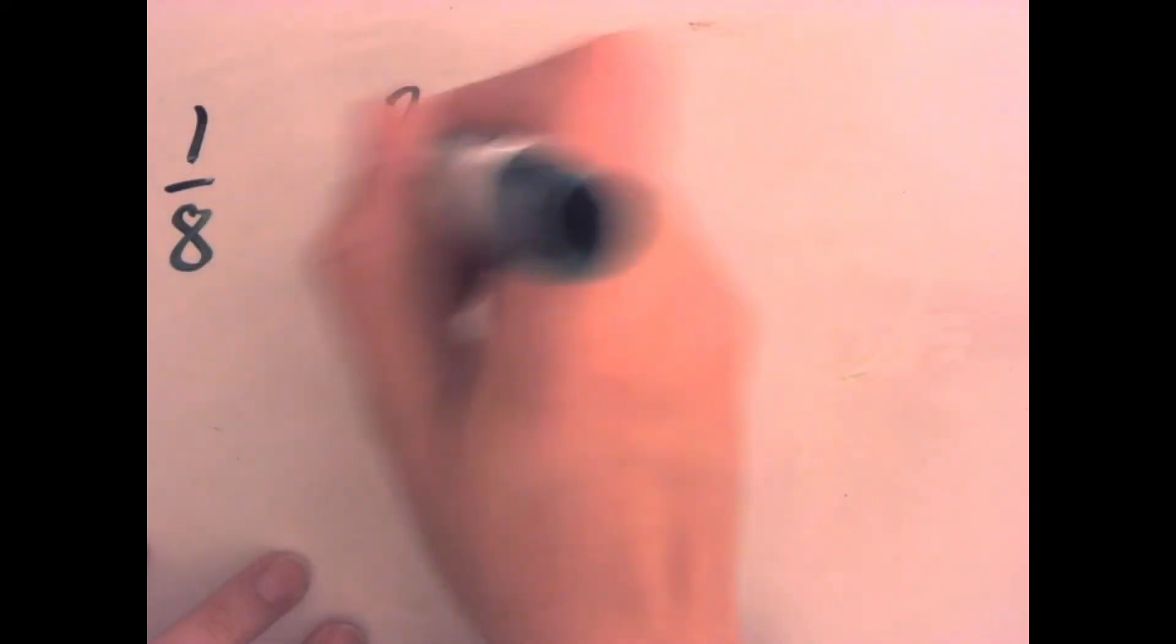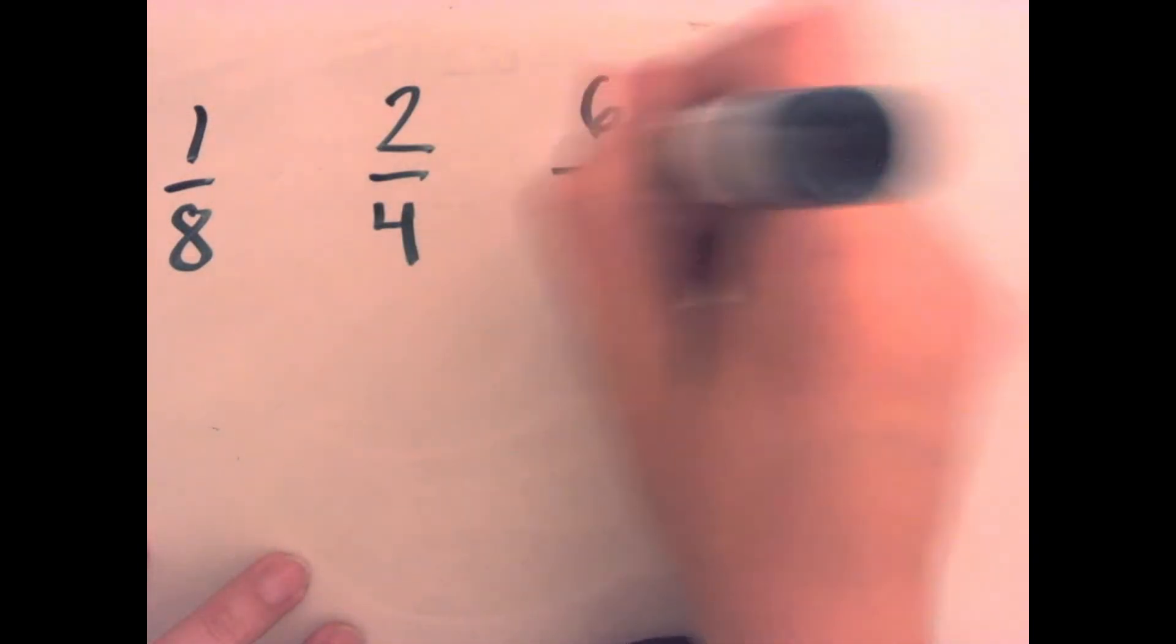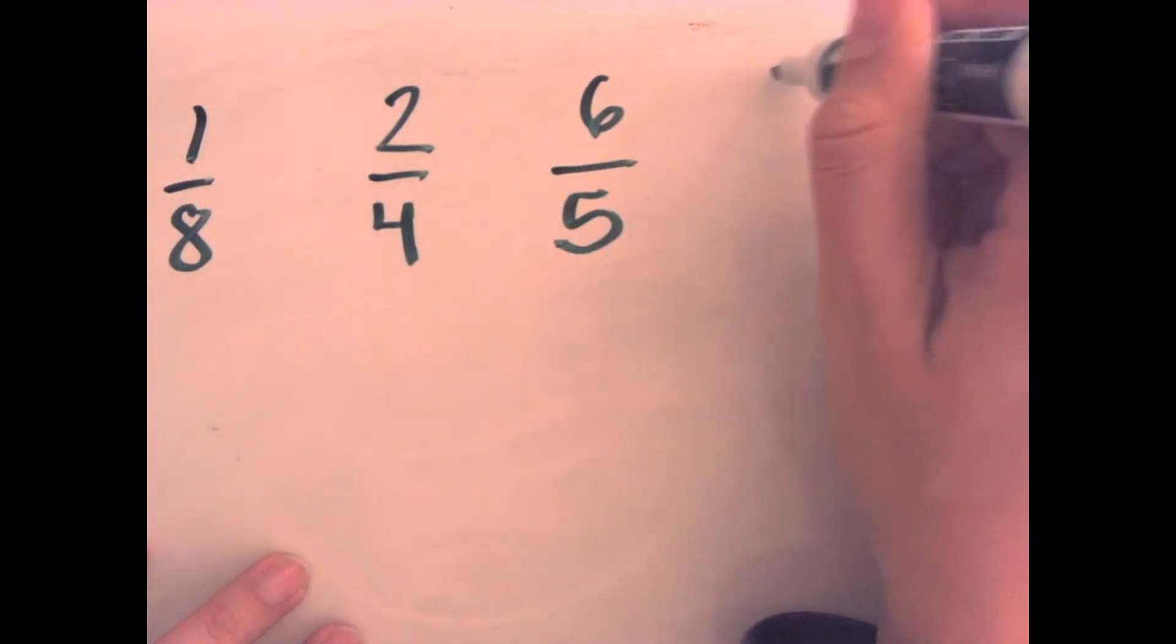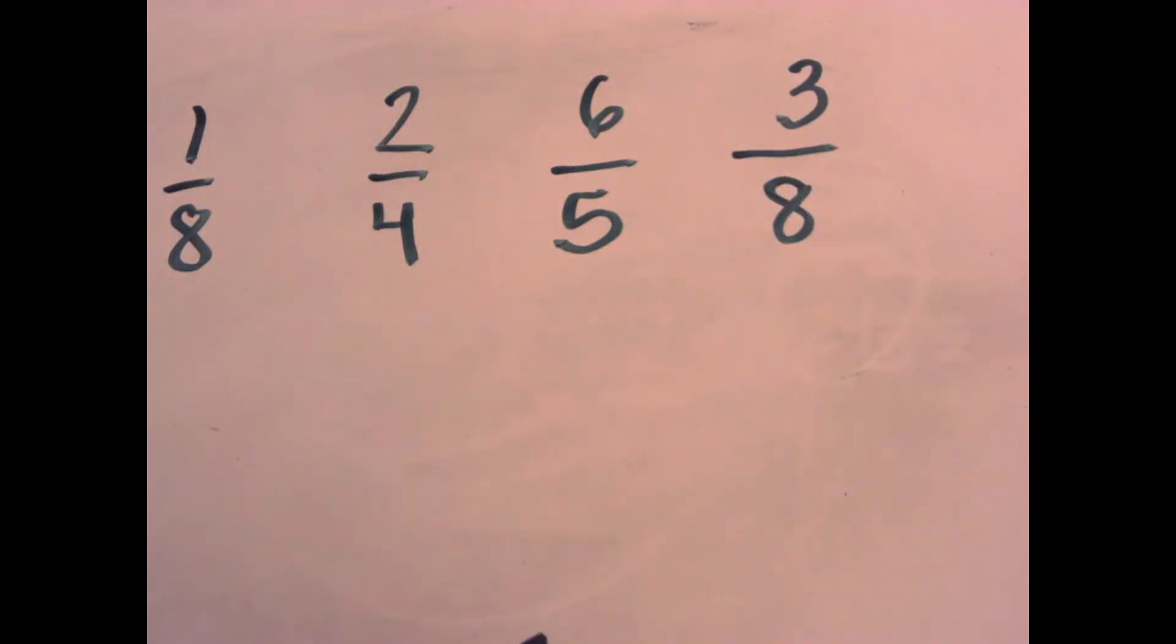And finally, we are going to order some fractions, put them in order. So we have these fractions. We're going to put them in order from least to greatest. So before we do anything, we're just going to think about the size of these things. One-eighth, I know, is going to be pretty small because it's pretty close to zero. Eight pieces is the smallest amount of all of these. Two-fourths. Two-fourths is half, right? Okay, I know that.